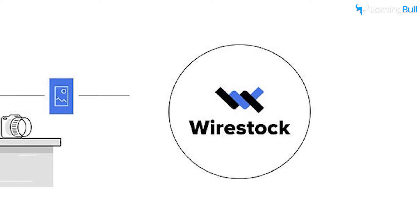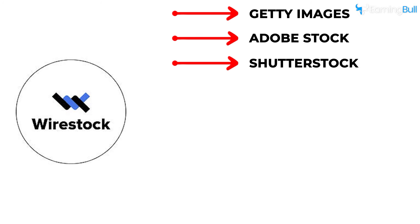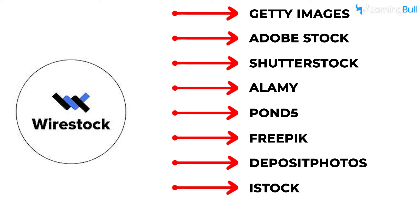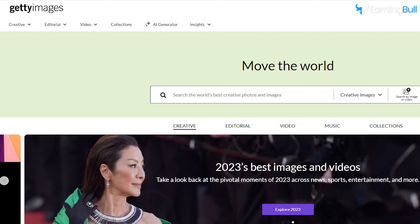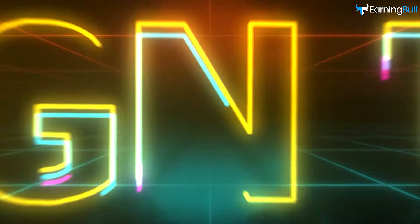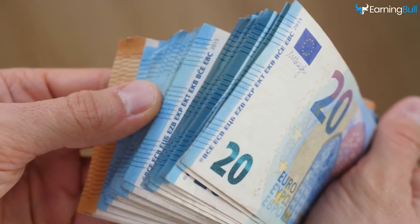Some of the major players they work with are Getty Images, Adobe Stock, Shutterstock, Alamy, and Pond5, along with Freepik, Deposit Photos, iStock, and Dreamstime. If you go through all these marketplaces one by one to sell your images, each one will require you to sign up, complete forms, and take large percentages of your earnings.